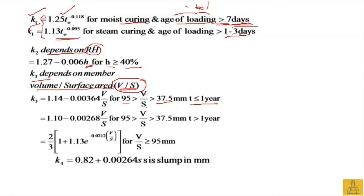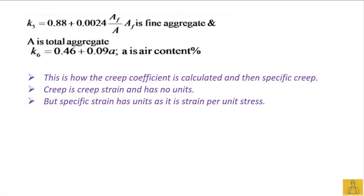When V/S is between 37.5 and 95 mm and the age of concrete at testing is greater than one year, a similar equation applies. If V/S is greater than or equal to 95 mm, irrespective of the time of testing, another equation is used. k4 accounts for slump (workability), k5 for the aggregate content, and k6 for the air content in the concrete.